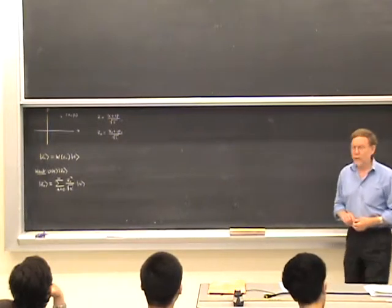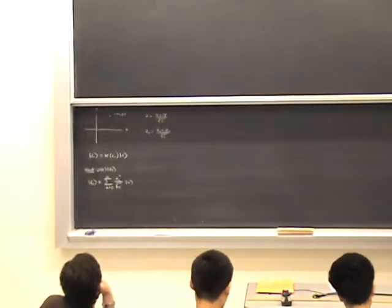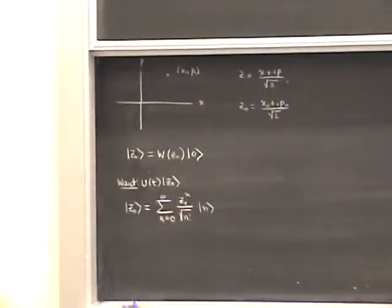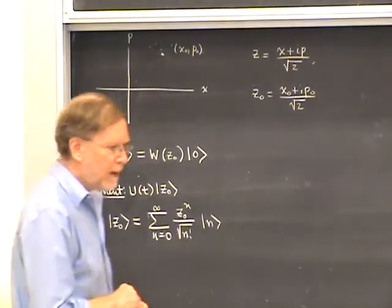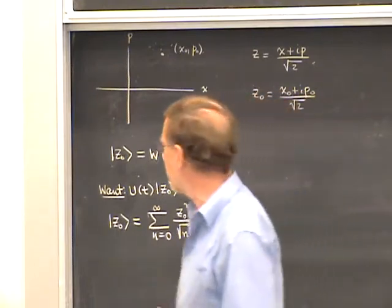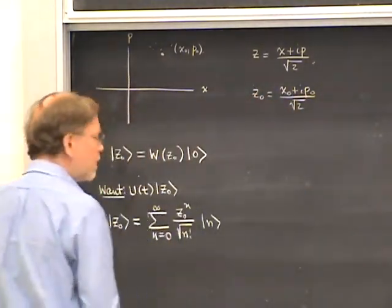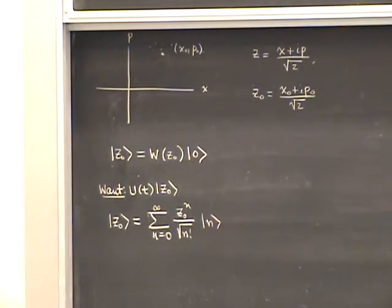Let me begin by reviewing where we were last Wednesday. The idea is that we're interested in evolving a coherent state in quantum mechanics in time, partly as a way of understanding its relationship to classical mechanics, where a coherent state has a minimum of the product of the dispersions of X and P, and so in some sense it represents a quantum state as close as possible to a classical state.